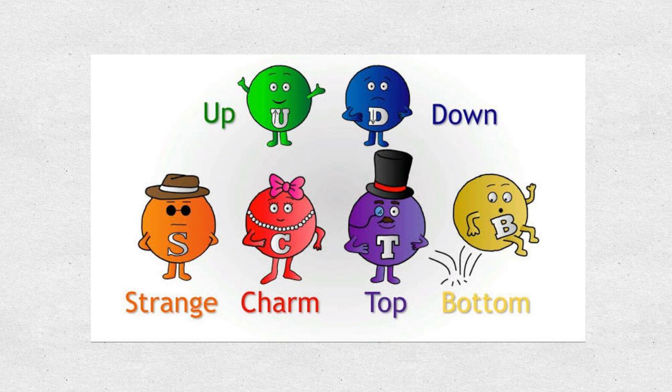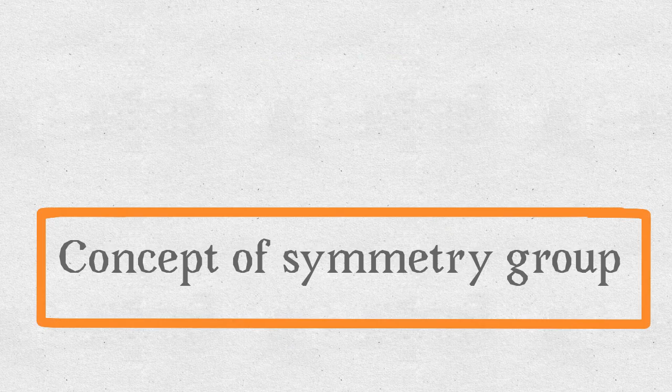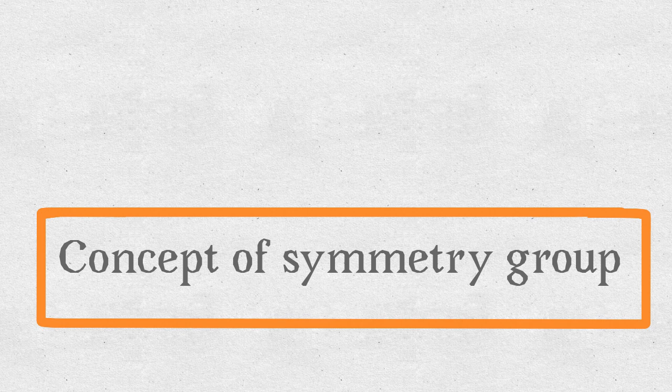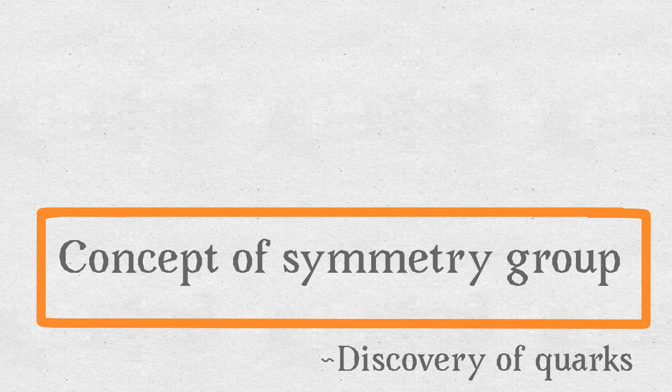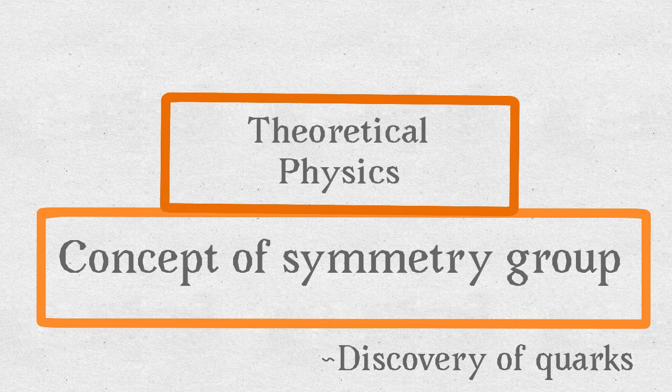Gell-Mann predicted quarks using a beautiful mathematical theory. It was in fact a mathematical discovery. The first thing you need to learn is the concept of symmetry group. That's the main idea. The concept of symmetry is the key to the discovery of quarks. A large part of mathematics as well as theoretical physics is based on it.